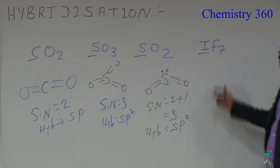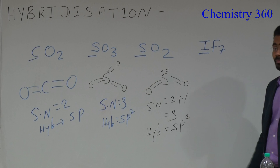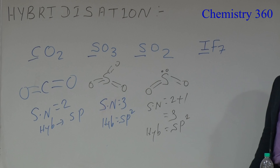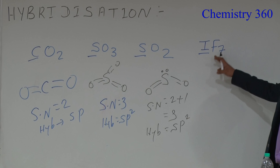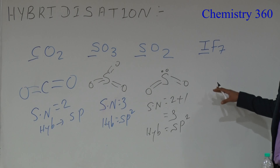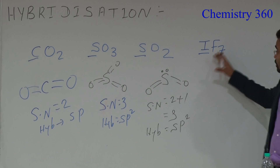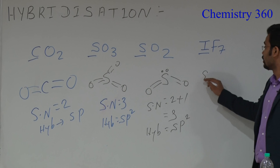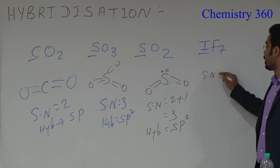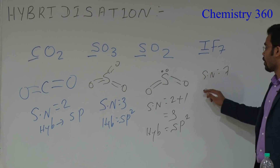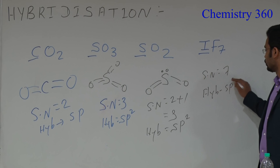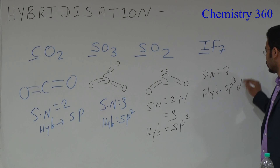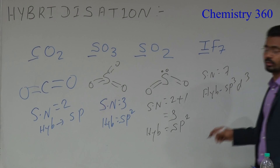For IF7, iodine has 7 valence electrons and there are 7 fluorine atoms, so there is no lone pair. Without needing to draw the full structure, you can simply state the steric number is 7.